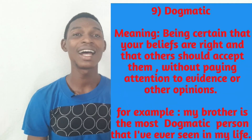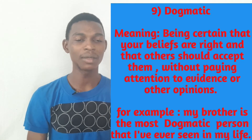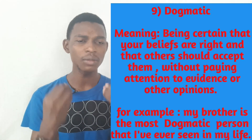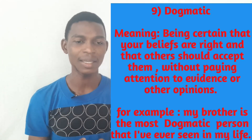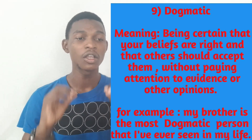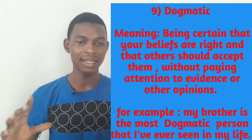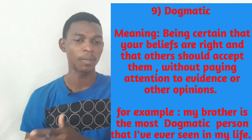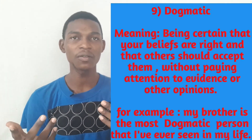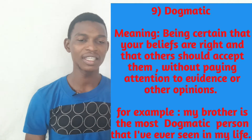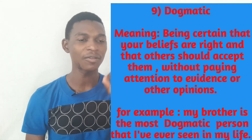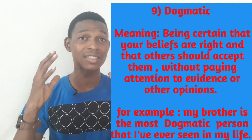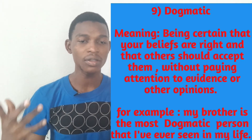Number nine is dogmatic. Dogmatic means being certain that your beliefs are right. If you are dogmatic, it means you are certain that your beliefs are right and that others should accept them without paying attention to evidence or other opinions. For example, my brother is the most dogmatic person that I've ever seen in my life — he is always certain that his beliefs are right and that others should accept them.